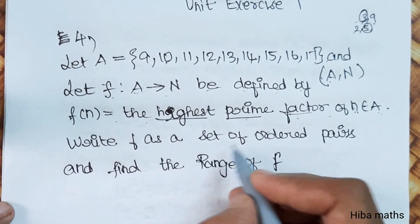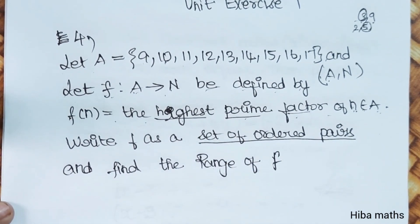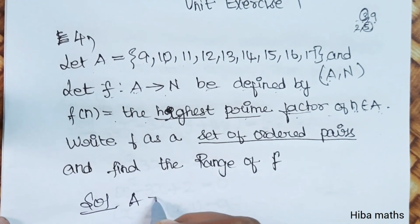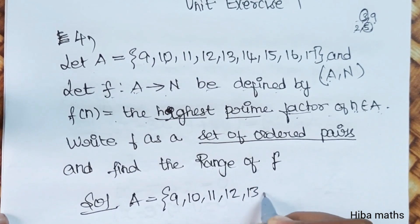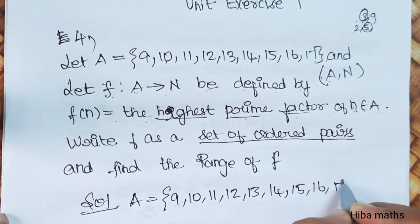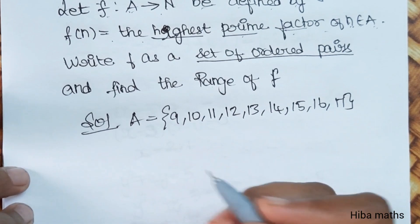Write f as a set of ordered pairs and find the range of f. Let's write the set of ordered pairs. The values are 9, 10, 11, 12, 13, 14, 15, 16, 17. Now we know all the prime factors, that is the ordered pair.